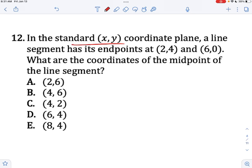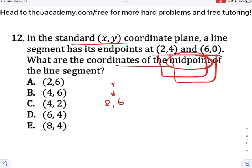In the standard coordinate plane, a line segment has these endpoints. What are the coordinates of the midpoint? So with midpoint, all you do is you average your x value, so 2 and 6. What's the average? It's 4. It's the number right in between. And 4 and 0, what's the average of 4 and 0? What's the number right in between? It's 2. So 4, 2 is your answer.